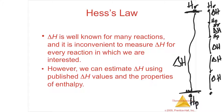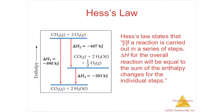So this says we can estimate the delta H using published delta H values and the properties of enthalpy. And enthalpy means that it's a state function. Hess's Law states that if a reaction is carried out in a series of steps, delta H for the overall reaction will be equal to the sum of the enthalpy changes for the individual steps.